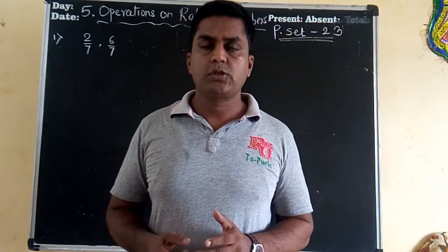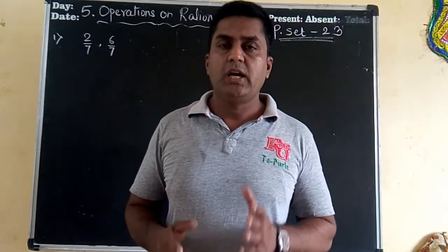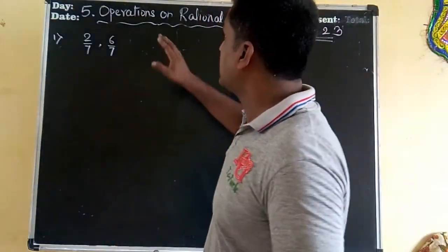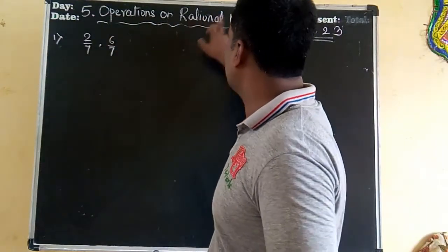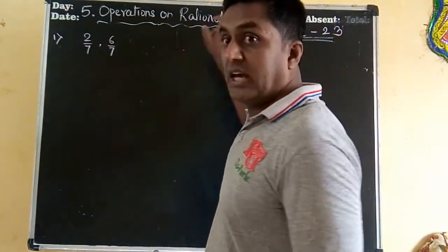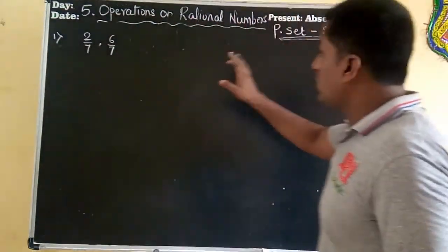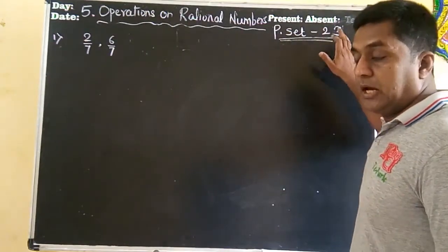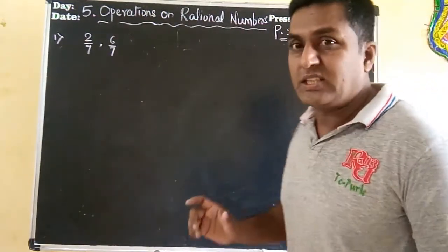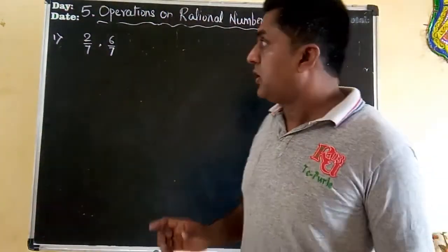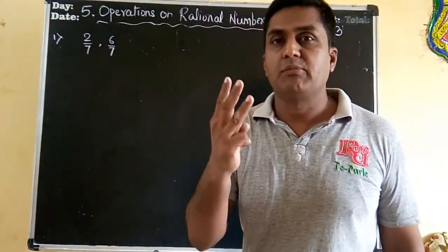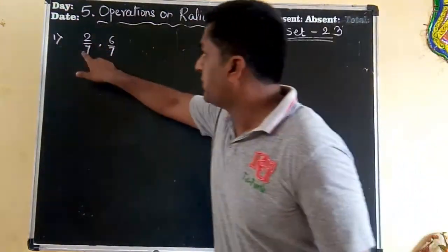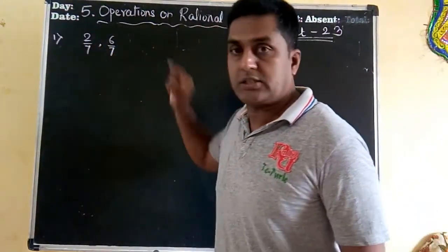Hello students, today we are going to continue with lesson number 5 — operations on rational numbers — and we are going to solve practice set 23. Practice set 23 asks us to find out 3 rational numbers which are present between 2 given rational numbers.